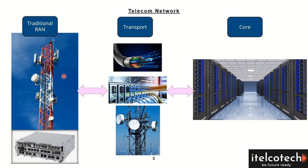Any cell site in the network has to go back to the core network, which will then take data either to the data network or to the PSTN. To take any information from the user device to the base station and then back to the transport network, there are two options: either we take it through fiber cable, or through the microwave antennas.